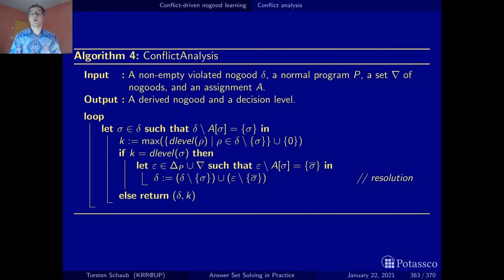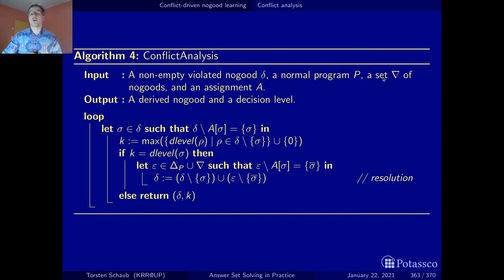Here's our conflict analysis algorithm. There is no new concept in it — it makes precise what we have been discussing on the previous slides. What we get as input is a violated no-good delta, our program, a set of dynamic no-goods, and the current assignment. What we output at the end is a new conflict no-good and a decision level where to jump back to.